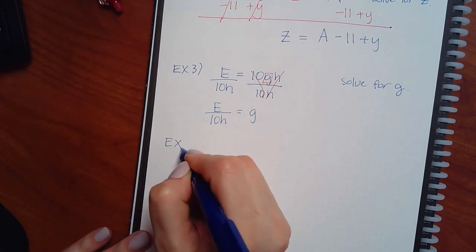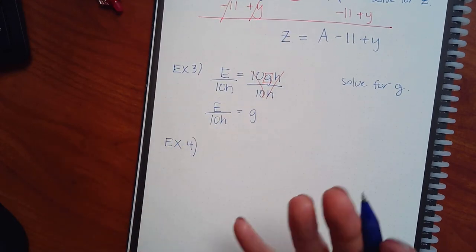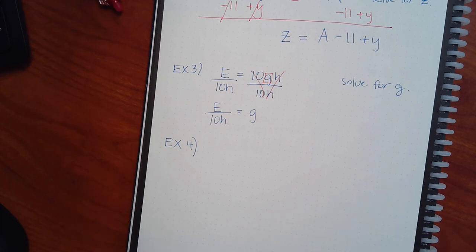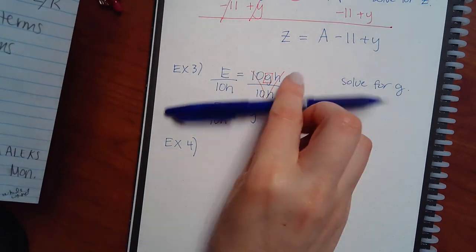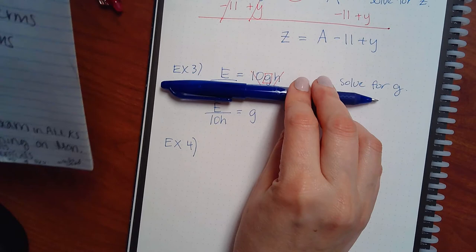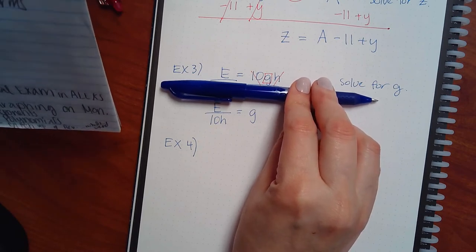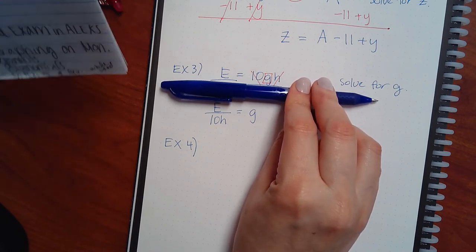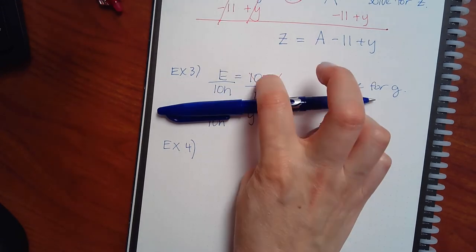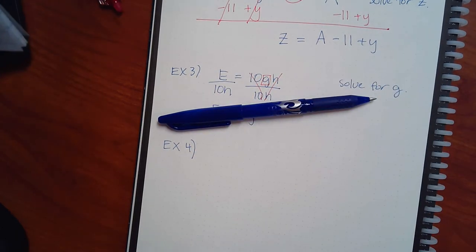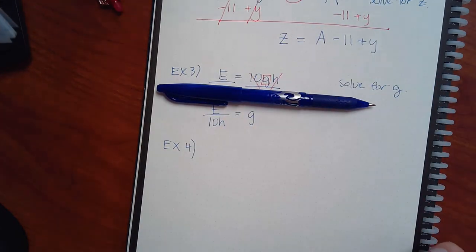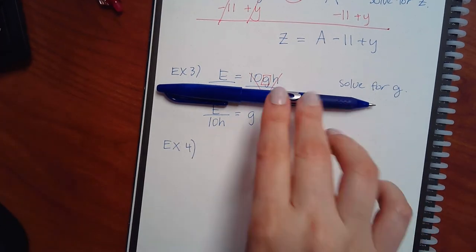When they're one-step problems it may not be convenient to go through all six steps, but if I did: no parentheses, no fractions, no like terms, the variable G is already on one side with no constants to move, and the last step was just divide. So I can still walk through all six steps — it's just that most of them are skips.